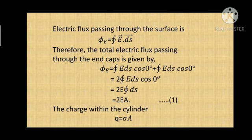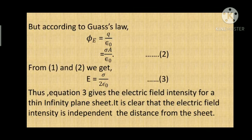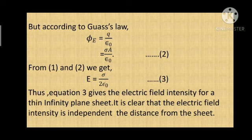Now, the charge within the cylinder is q = sigma * A. According to Gauss's Law, phi_e = q / epsilon_naught. Applying q = sigma * A, we get phi_e = sigma * A / epsilon_naught. Let us call this equation 2. From equation 2, we get E = sigma / (2 * epsilon_naught).